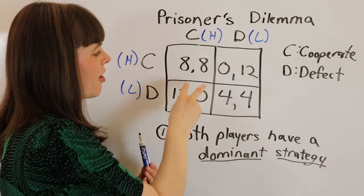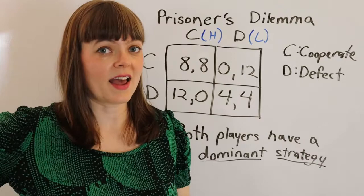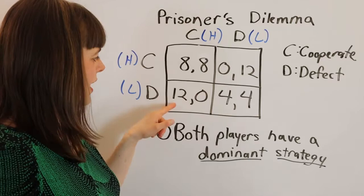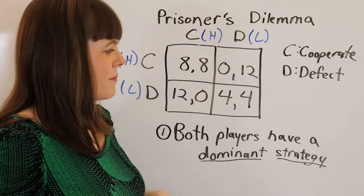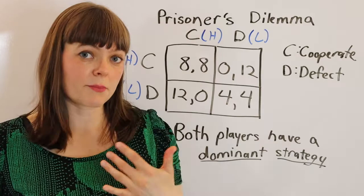The payoffs are: if both set the price high, they split the market and the price is high, so they each get eight. If one sets the price high and the other sets it low, everybody buys from the low-price firm — that firm gets the entire market's worth of demand and more money, while the high-price firm gets nothing. And vice versa depending on which firm sets the low price. If they both set the price low, they split the market as well, but make less money since the price is lower.